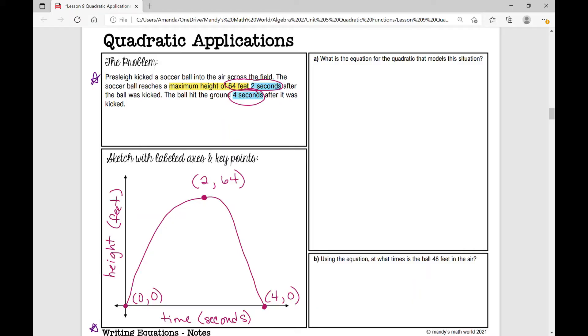We're asked to find the equation for the quadratic that models the situation. We need three points to find the equation of a quadratic. What three points would you use? I would obviously use that vertex, so 2,64. And then we know that 0,0 is a point in this quadratic, and we know 4,0 is a point in this quadratic.